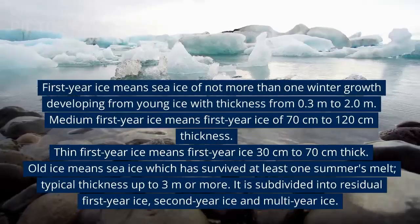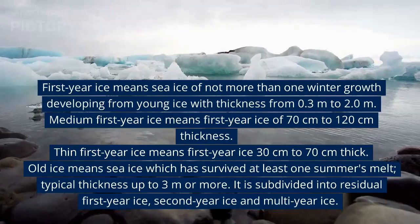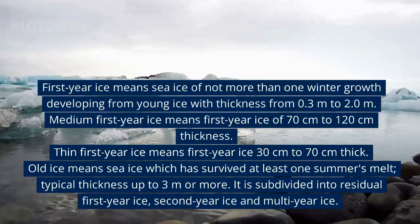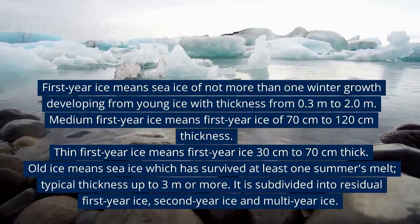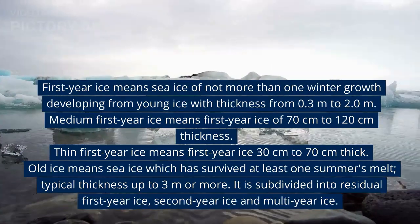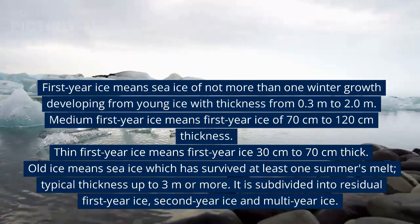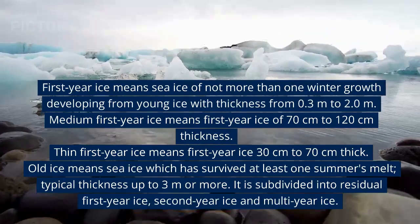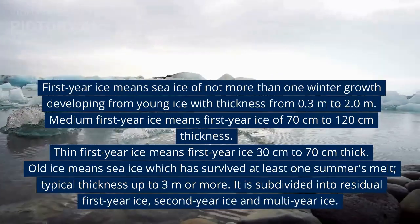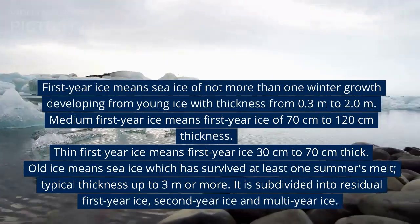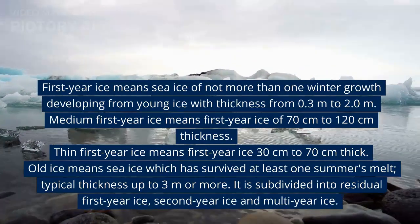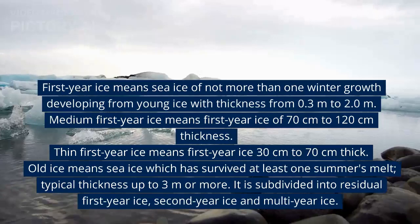First-year ice means sea ice of not more than one winter's growth developing from young ice, with thickness from 0.3 meters to 2.0 meters. Medium first-year ice means first-year ice of 70 centimeters thick. Old ice means sea ice which has survived at least one summer's melt, with typical thickness up to three meters or more. It is subdivided into residual first-year ice, second-year ice, and multi-year ice.